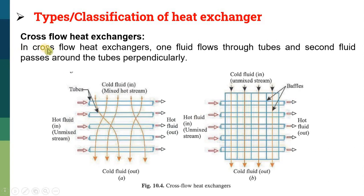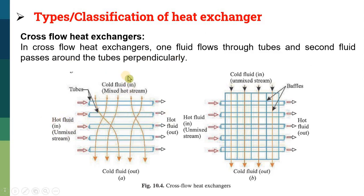Next is known as a cross flow heat exchanger. In a cross flow heat exchanger, one fluid flows over the tubes and the second fluid passes around the tubes perpendicularly. Here the hot fluid passes through the tubes and the cold fluid moves in a perpendicular direction above these tubes.